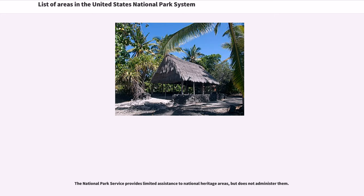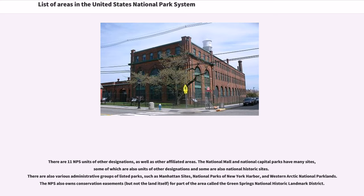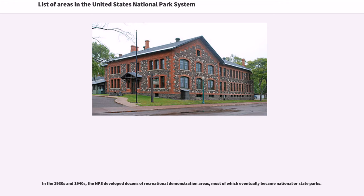The National Park Service provides limited assistance to national heritage areas, but does not administer them. There are 11 NPS units of other designations, as well as other affiliated areas. The National Mall and National Capital Parks have many sites, some of which are also units of other designations and some are also National Historic Sites. There are also various administrative groups of listed parks, such as Manhattan Sites, National Parks of New York Harbor, and Western Arctic National Park Lands. The NPS also owns conservation easements for part of the area called the Green Springs National Historic Landmark District. In the 1930s and 1940s, the NPS developed dozens of recreational demonstration areas, most of which eventually became national or state parks.